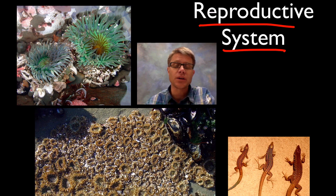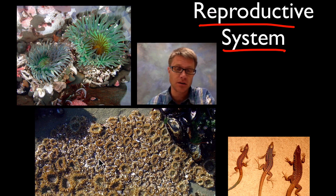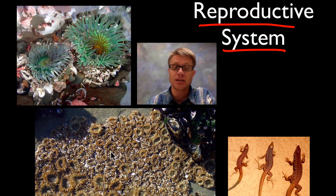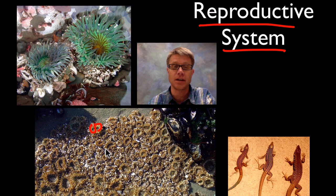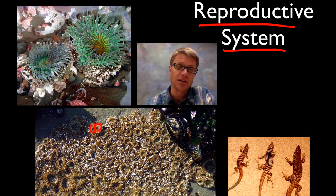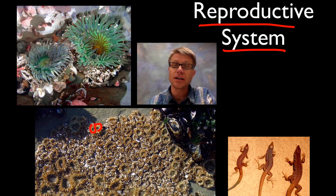Not all organisms reproduce sexually. These right here are sea anemones. Sea anemones have the ability to reproduce asexually — basically they'll simply split in half and form two new anemones. All of these right here are clones of one anemone, and these ones are clones from different anemones that are fighting. So this is like a clone war, but they're all identical.